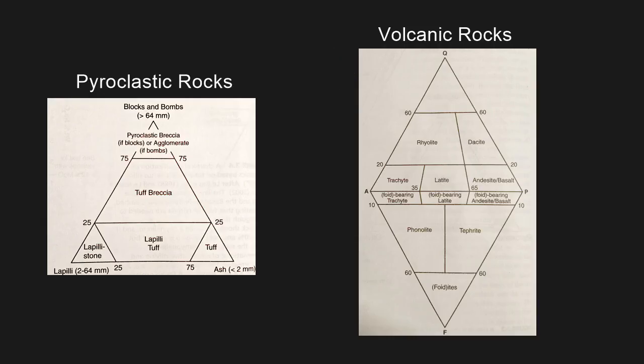So here are the two other diagrams that are commonly used to classify igneous rocks. On the left is a diagram for pyroclastic rocks, and instead of mineralogy, we're going to classify pyroclastic rocks based on clast size. So no mineralogy, just clast size. But it works the same way as the other diagram. On the right, we have a QAPF diagram for extrusive or volcanic rocks. This works exactly the same way as the other diagram we've been looking at, you would just use it for extrusive or volcanic rocks.